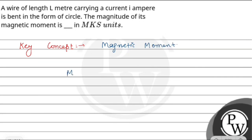We know magnetic moment, that is M = I × A. So first we have a wire of length L, and we have to bend it into a circle. This wire forms the circumference.